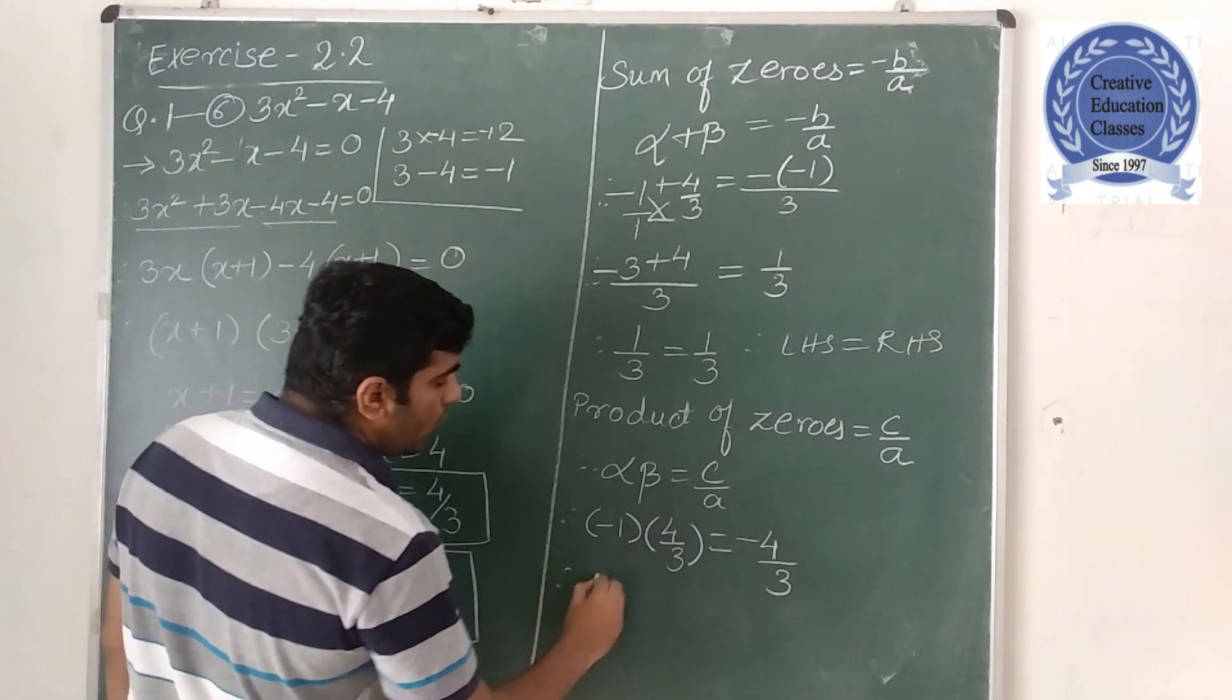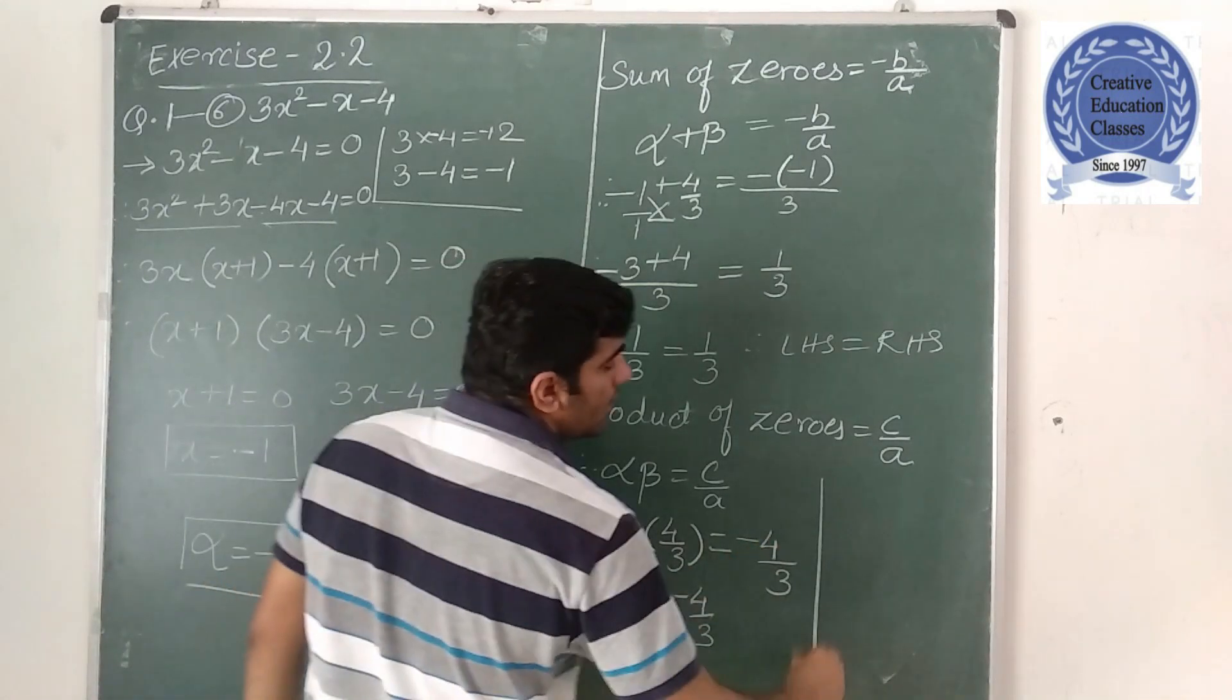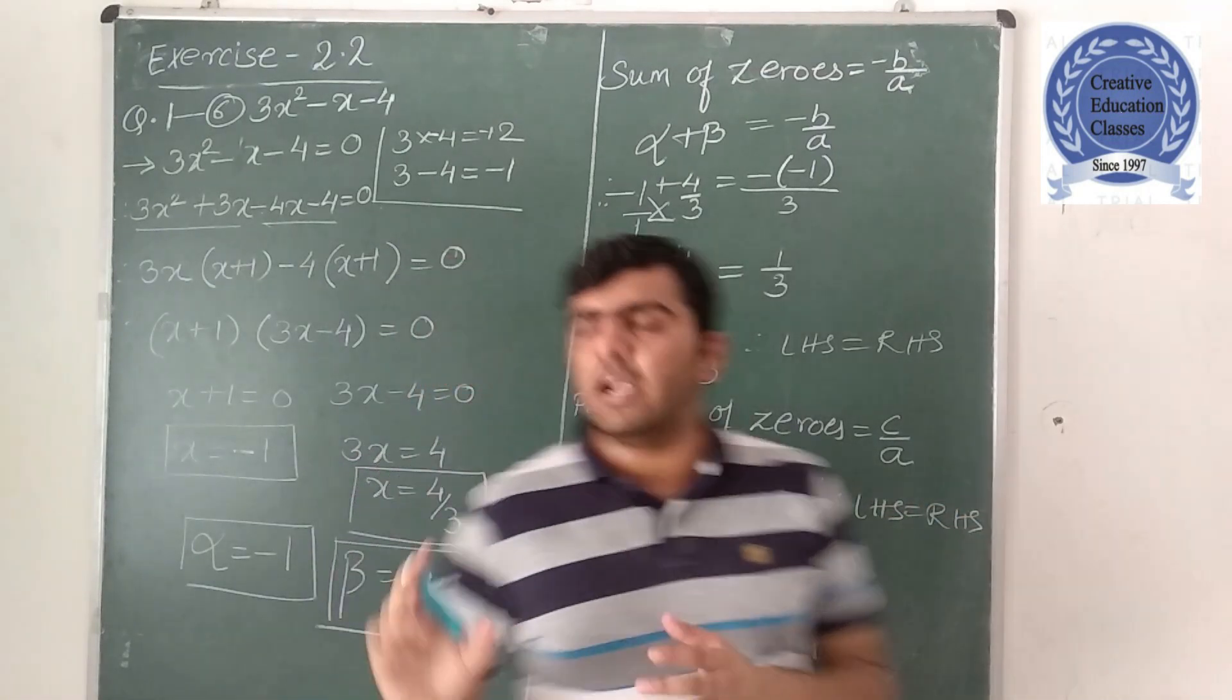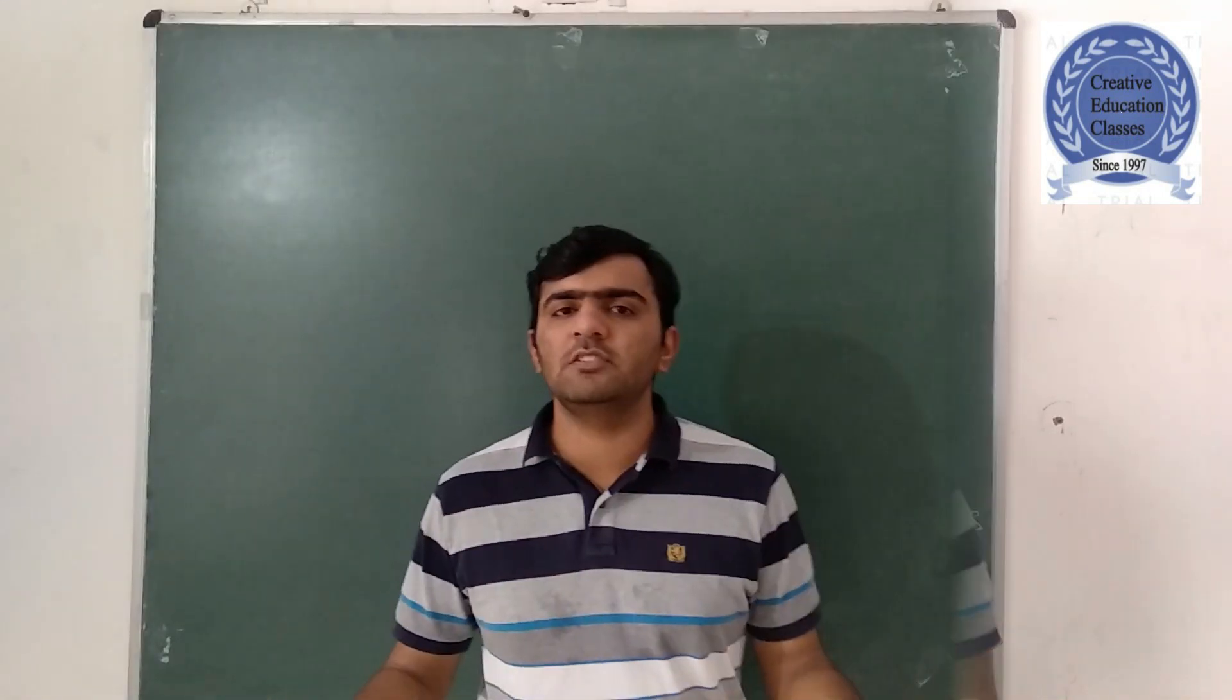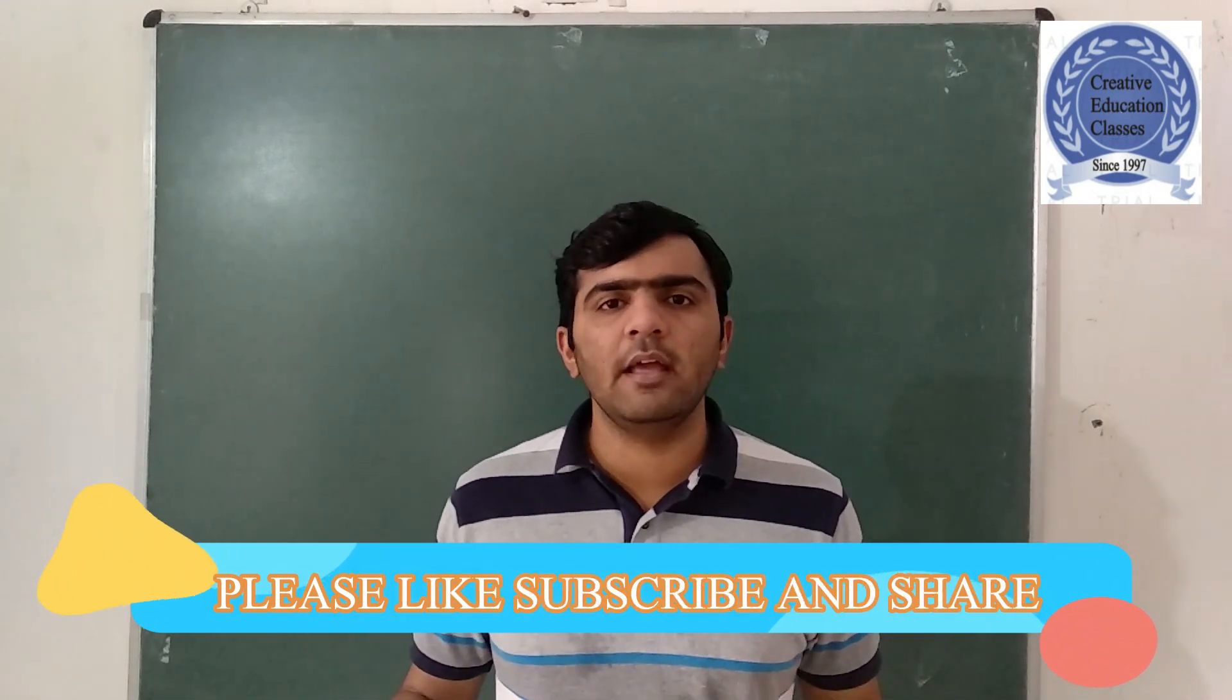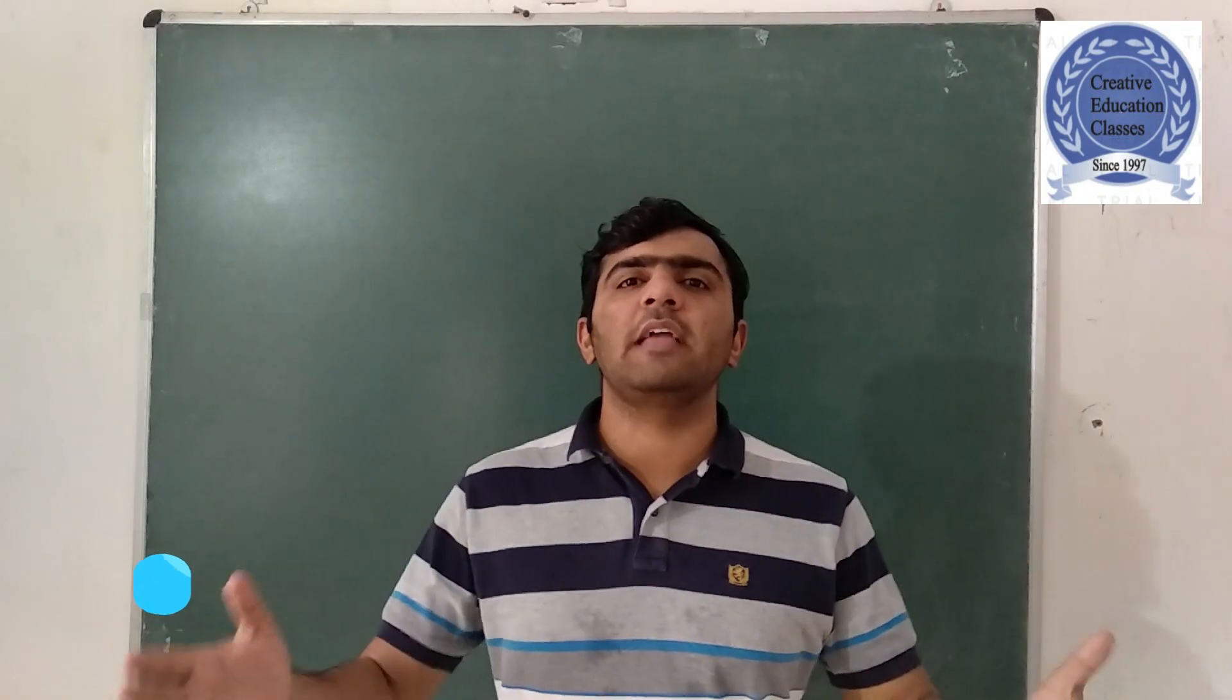So 4 cancels, minus 4 upon 3. Minus 4 upon 3. So I hope, in short, we can say that LHS is equal to RHS. So I hope we have verified this. We have understood this. Thank you so much for watching. If you are new to my channel, please subscribe, like and share. Thank you so much.